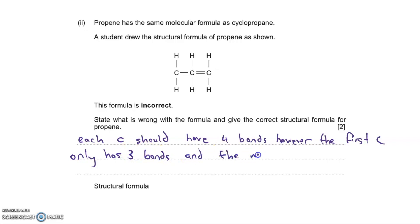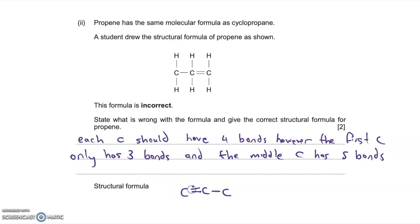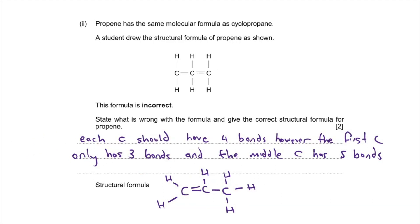For the second mark you're required to draw the correct structural formula for propene. Propene is an alkene, so it has a carbon-carbon double bond, three carbons, and six hydrogens. I'm drawing three carbons with a double bond between carbons one and two, then placing hydrogens so each carbon has exactly four bonds. The first carbon has two hydrogens and the double bond; the second carbon has the double bond, one hydrogen, and a bond to carbon three; the last carbon has three hydrogens and one bond to carbon. That correct structure gets one mark.